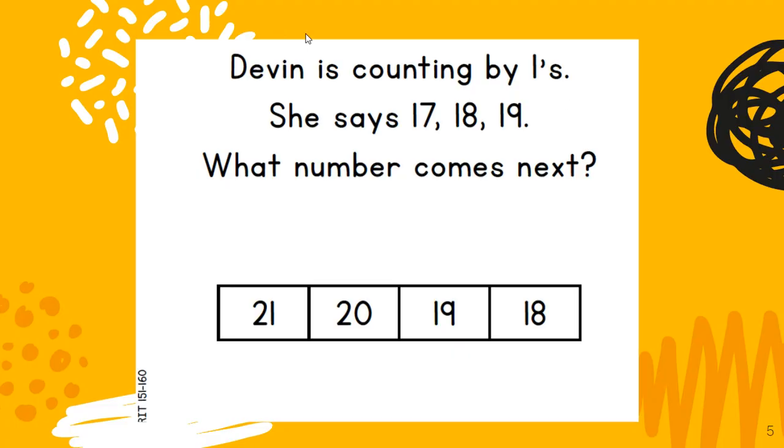Let's look at this problem. Devin is counting by ones. She says 17, 18, 19. What number comes next? 17, 18, 19, 20. 20 comes next. Again, we did not start counting at number one. We started at 17.